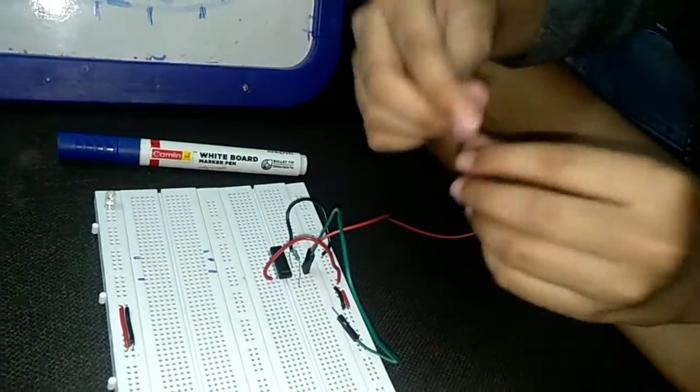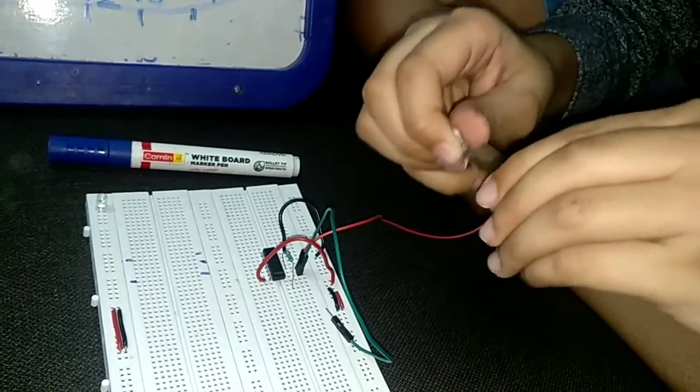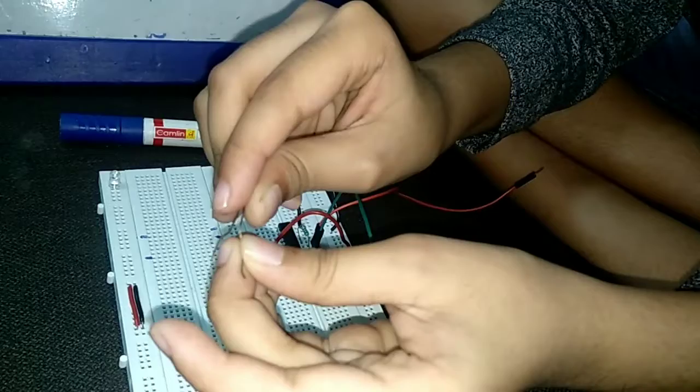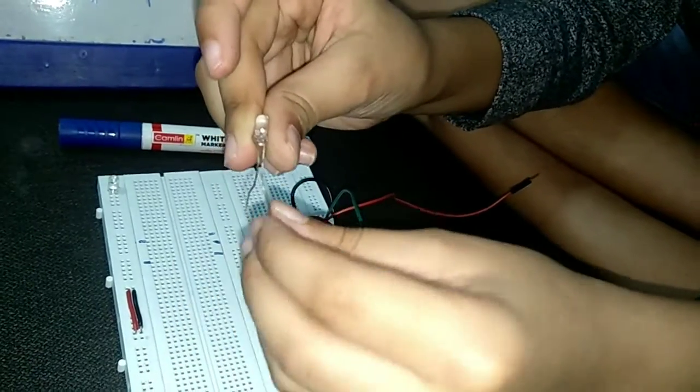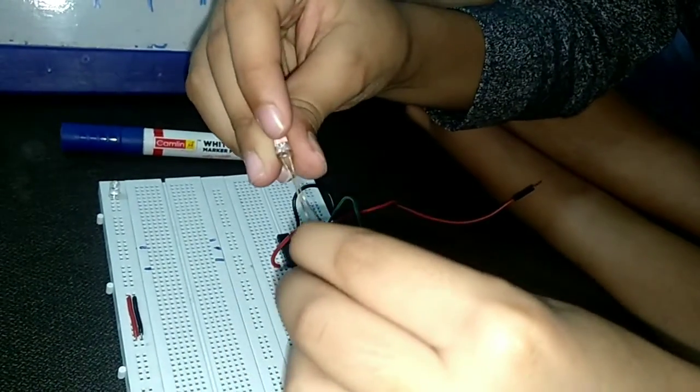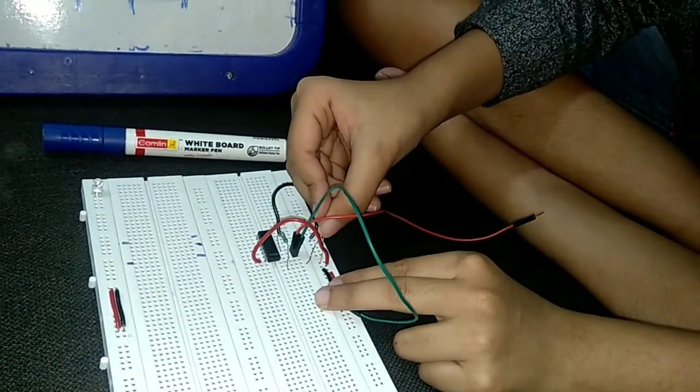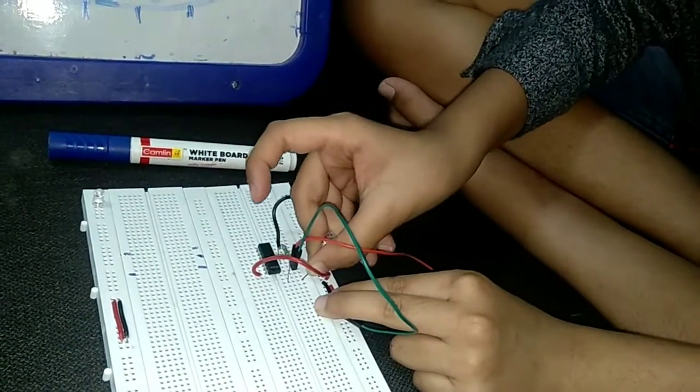This is the LED. You can see this big side, right? This big side is positive and this small one is negative. Now I am going to connect it to my breadboard.